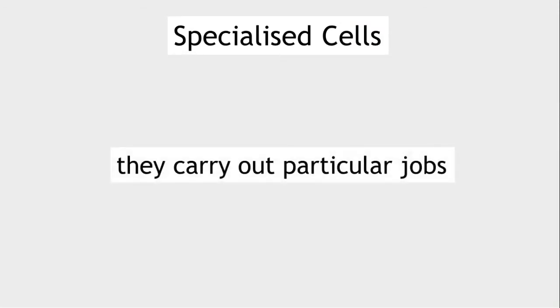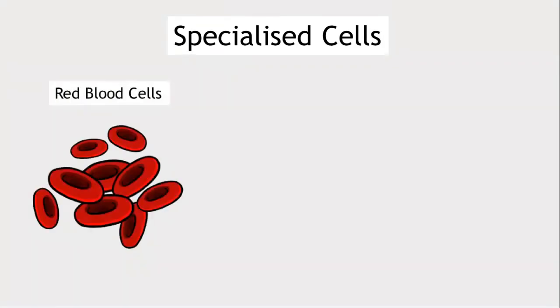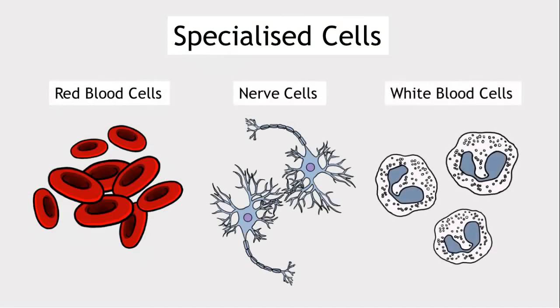Specialized cells. Some cells are specialized. They are able to carry out particular jobs. The specialized cells we will look at are red blood cells, nerve cells, and white blood cells.